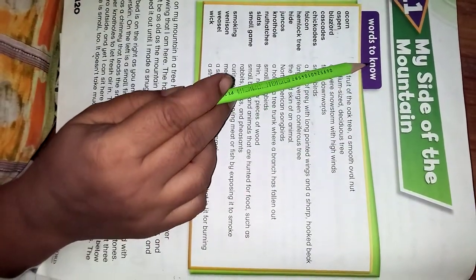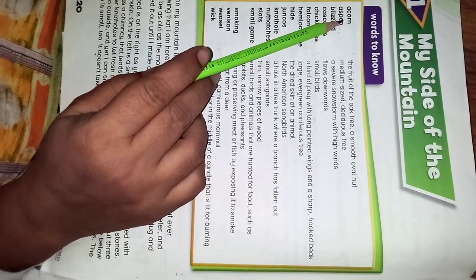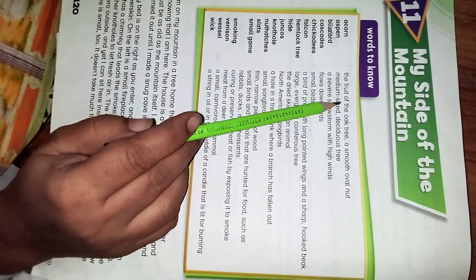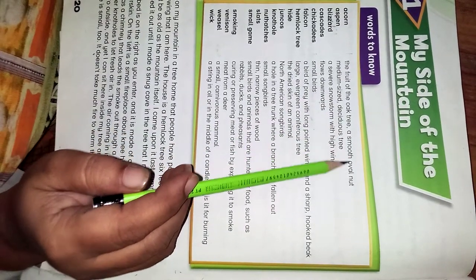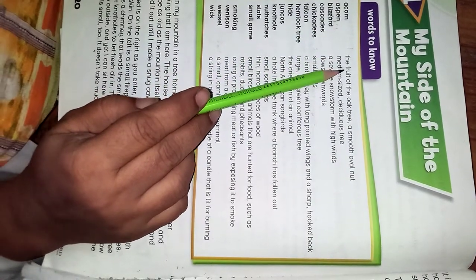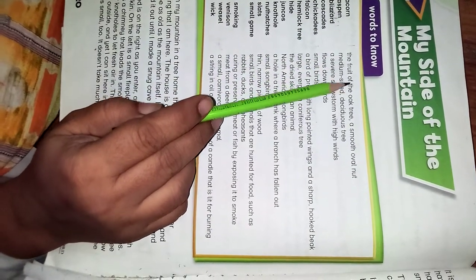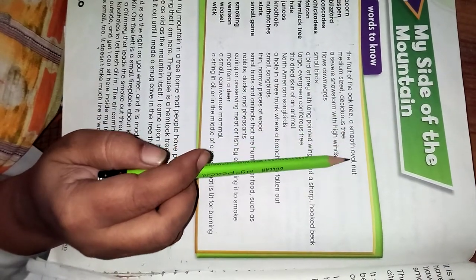First of all, we know the fruit of the oak tree. Acorn: a smooth oval nut.